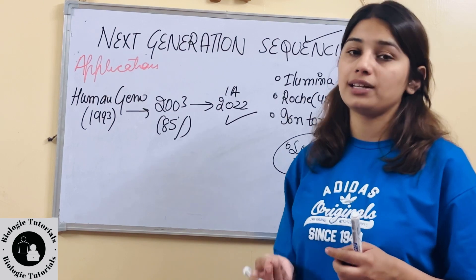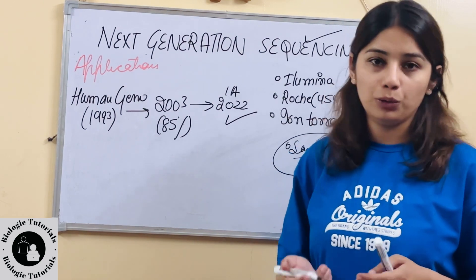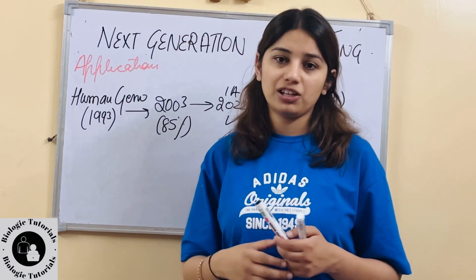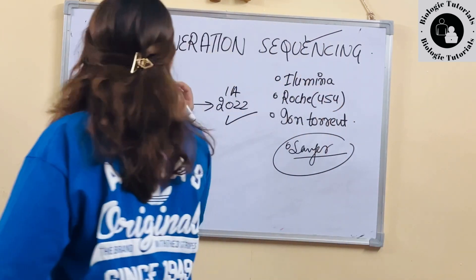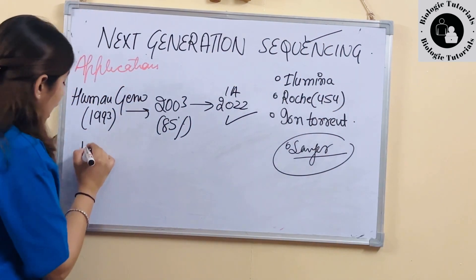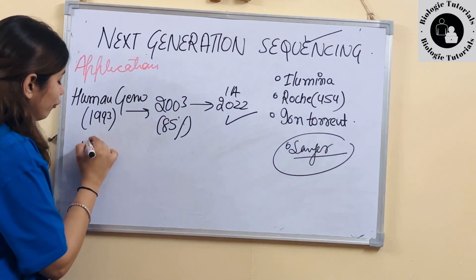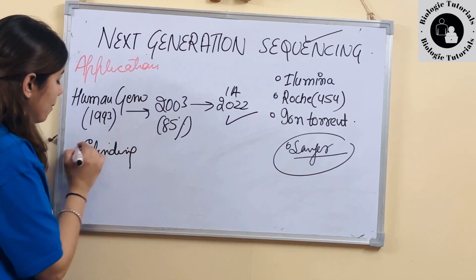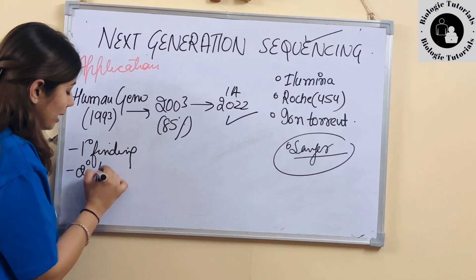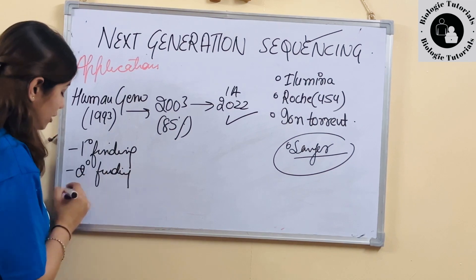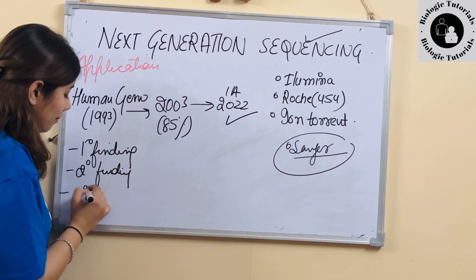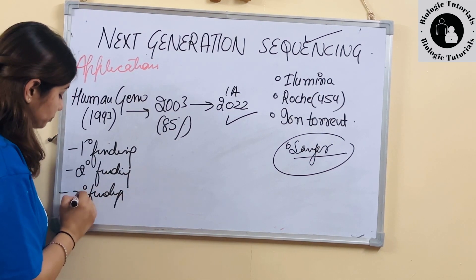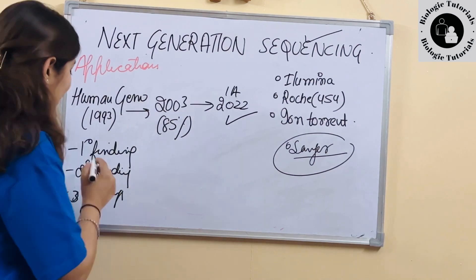Aur isme hum DNA bhi use kar sakte hain, RNA bhi use kar sakte hain. Ab baat karte hain applications ki — yeh karti kya hai. Toh next generation sequencing se hum teen tarah ki findings kar sakte hain: ek humare paas aati hai primary findings, ek humare paas aati hai secondary findings, aur ek humare paas aati hai tertiary findings.